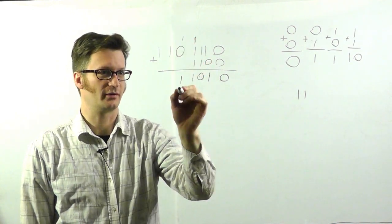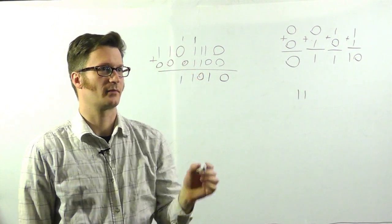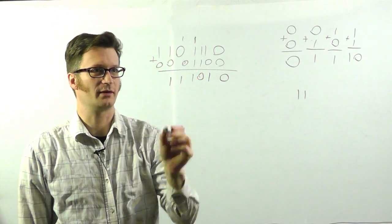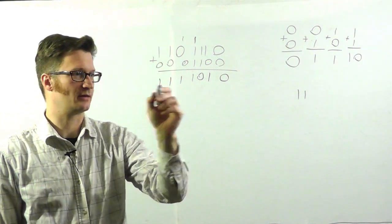1 plus 0 is 1. And this is 0, 0, 0. 1 plus 0 is 1. 1 plus 0 is 1. So these two added together equals this.